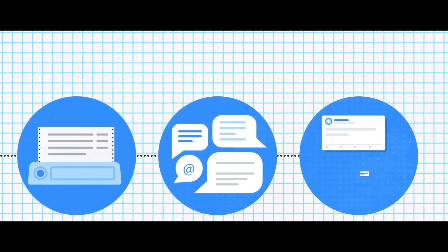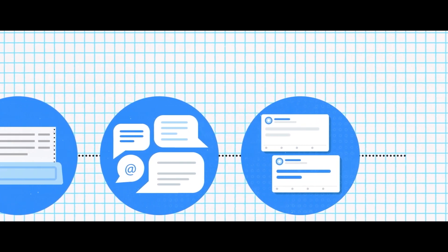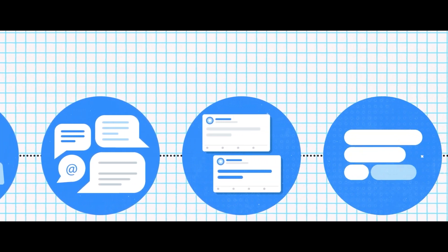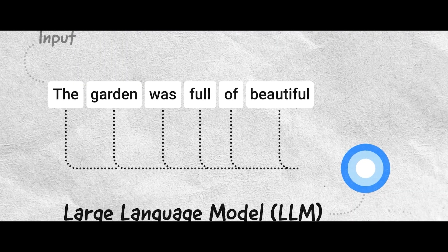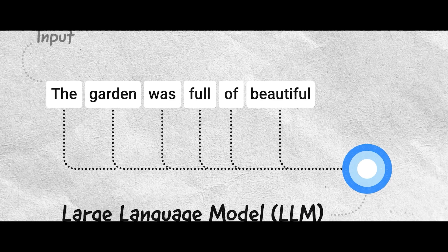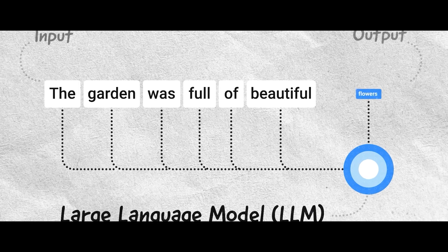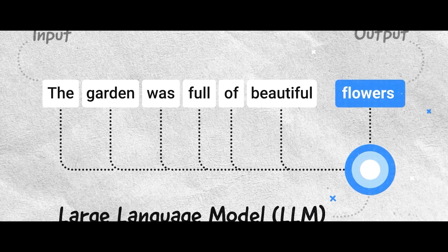They can generate poems, essays, or even movies. They can help brainstorm new ideas or find new material. In a nutshell, these models predict the next token in a sequence, like words in a sentence.